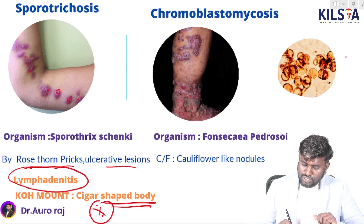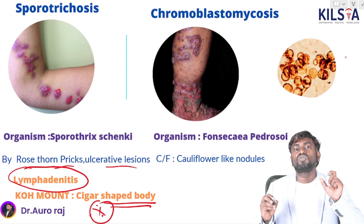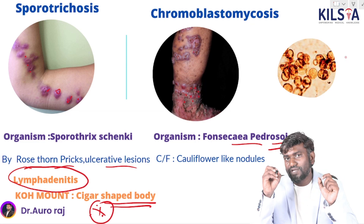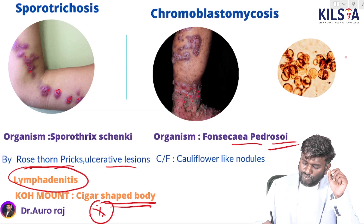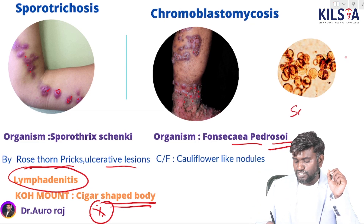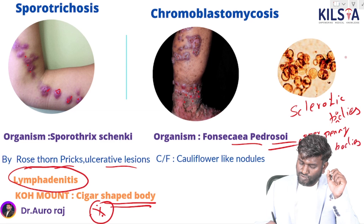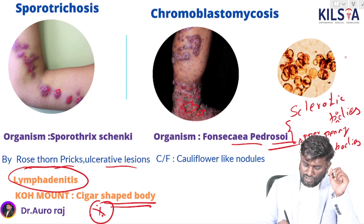This image shows chromoblastomycosis. The most important causative organism is Fonsecaea pedrosoi. You will see characteristic structures called sclerotic bodies, also known as Medlar bodies (copper-penny bodies). The lesions have a cauliflower-like appearance. These have been asked multiple times in exams.